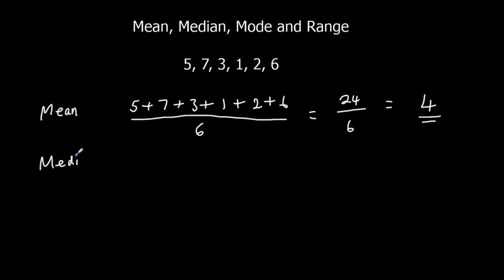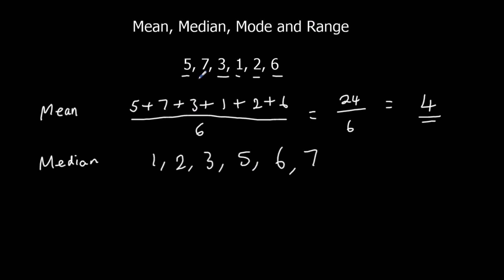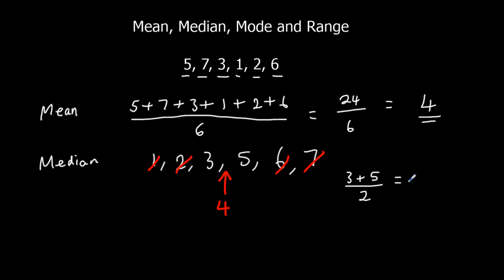The median is the middle number. We're going to put them in order first: 1, 2, 3, 5, 6, 7. We cross off on both sides, but this time there is no middle number — we're left with 2 numbers in the middle. Whenever we're left with 2 numbers in the middle, we go halfway in between them. It's halfway between 3 and 5, which is the mean of 3 and 5: 3 plus 5 divided by 2, that's 4. So the median is 4.